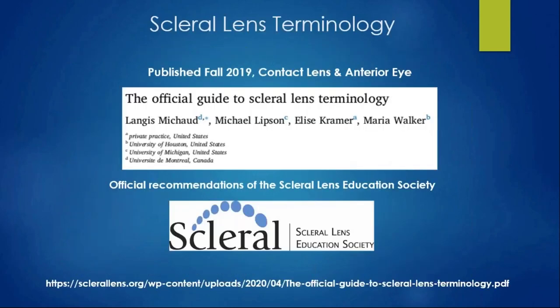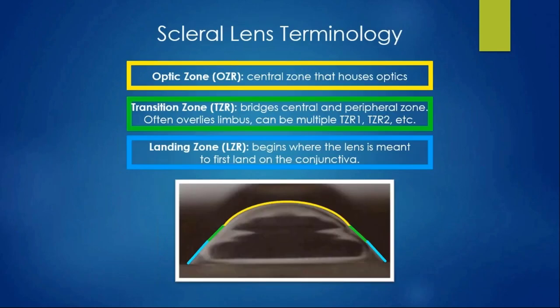To stay up to date with terminology, the Scleral Lens Education Society promotes an official guide available as a free PDF on their website, developed by UHCO's Maria Walker along with Elise Kramer. The key zones to orient yourself with: the optic zone is the central yellow portion housing all the optics, similar to a base curve radius. The transition zone in green slowly goes over the limbus. Finally, the landing zone is where the lens first meets the conjunctiva.